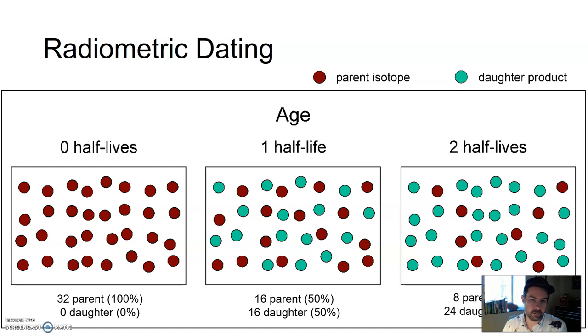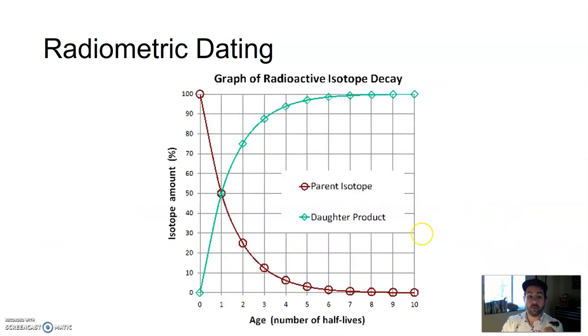What we do with that is we actually know the time, the half-lives, of radioactive material. A little chemistry, a little physics involved, but we know the time it takes for half of uranium to decay, to turn to lead. And there are a number of different radioactive isotopes that we can use.